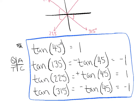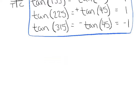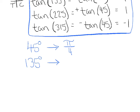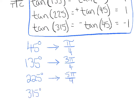One last bit of review: 45 degrees is equivalent to π/4 radians. When you convert the others, just ask how many times bigger each angle is compared to 45. 135 is three times bigger, so it's 3π/4. 225 is five times bigger than 45, so it's 5π/4. And 315 is seven times bigger than 45, so it's 7π/4.